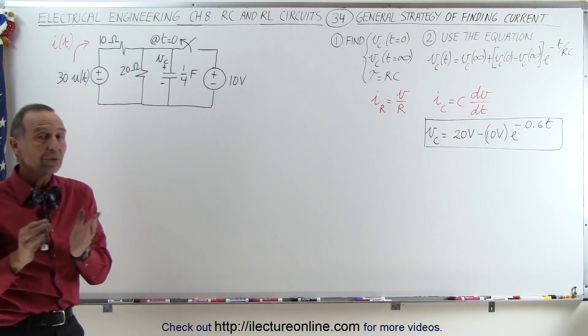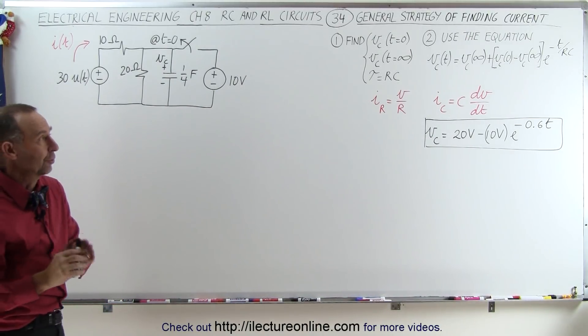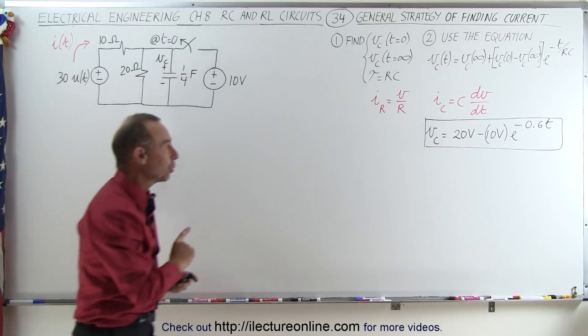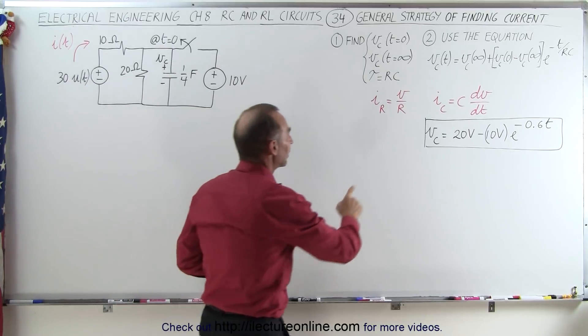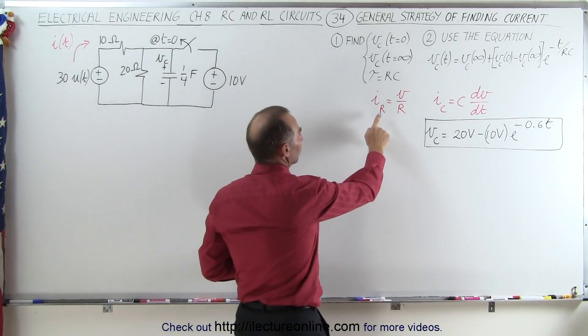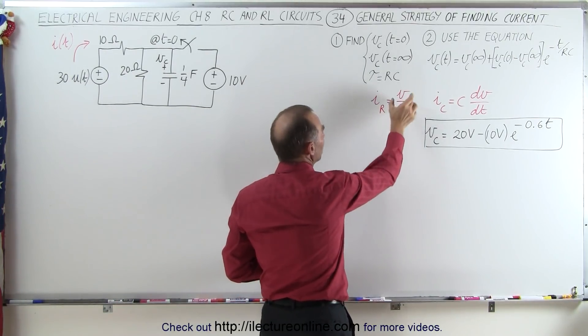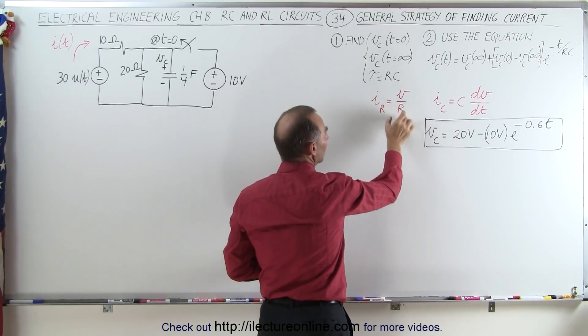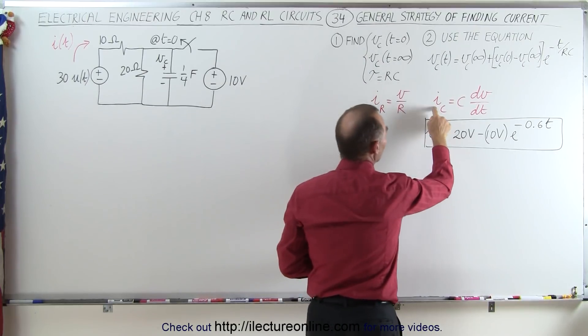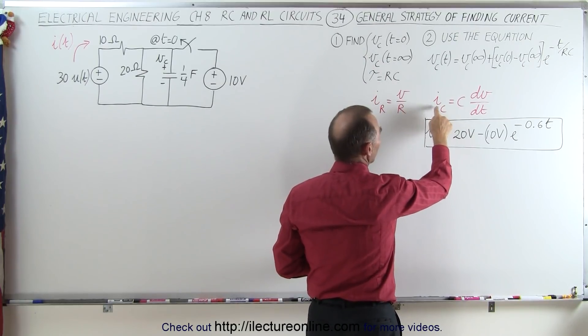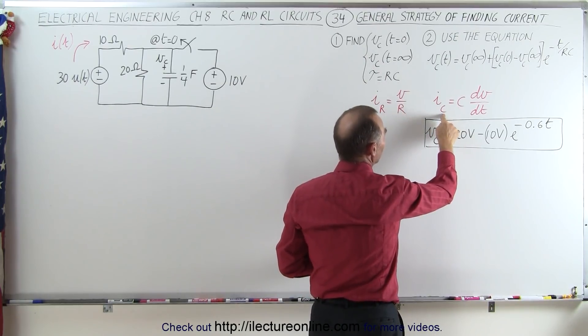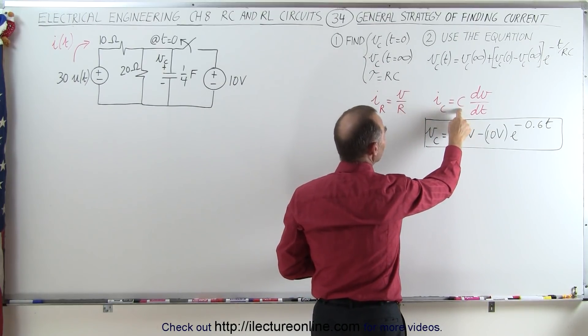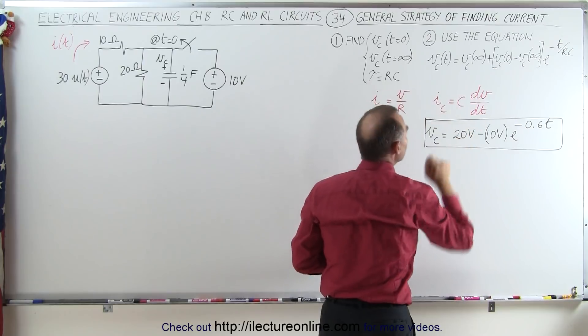Now we're going to find the current. The general approach is that the current through the resistor is going to be equal to the voltage across the resistance divided by R, and the current through the capacitor is going to be C times dv/dt.